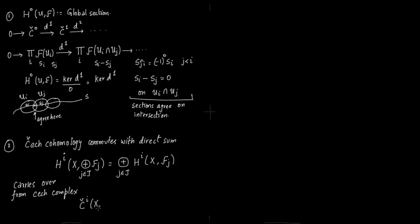This basically carries over because the direct sum also comes out in the Czech complex. So you have this Czech complex, J is an element of J, Fj. This direct sum just comes out. Now I will write down the toy example of F of Ui. Say you are talking about group C0.